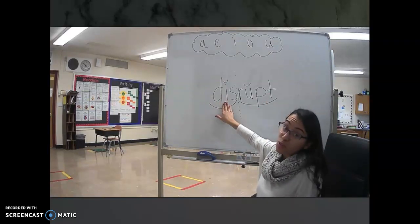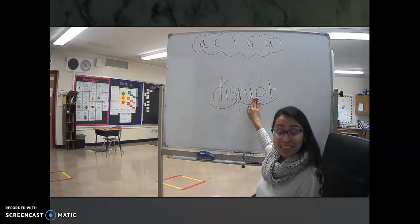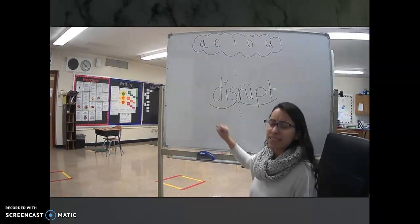So, in this syllable, the first one, the I is the vowel. In the second syllable, the U is the vowel. So, let's go ahead and tap it.